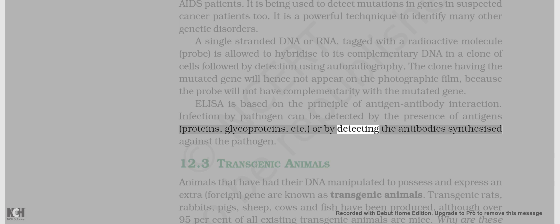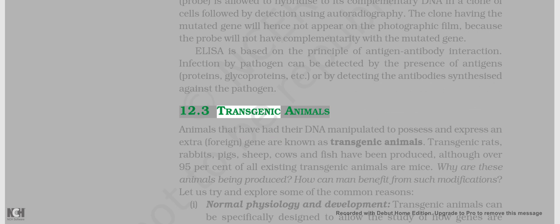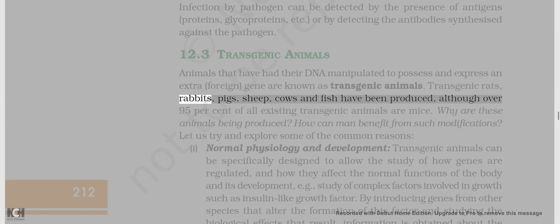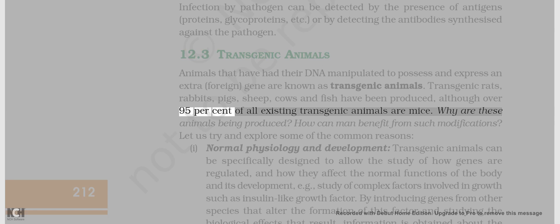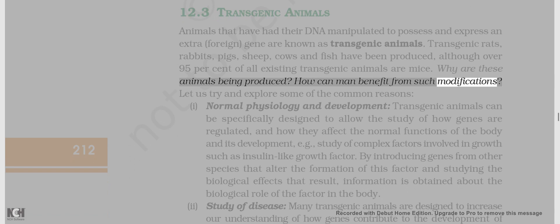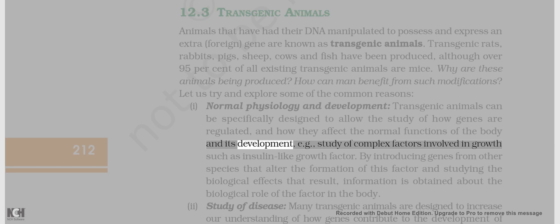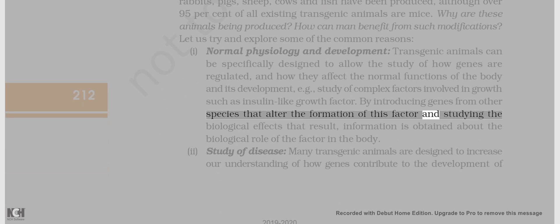12.3 Transgenic Animals. Animals that have had their DNA manipulated to possess and express an extra, foreign gene are known as transgenic animals. Transgenic rats, rabbits, pigs, sheep, cows and fish have been produced, although over 95% of all existing transgenic animals are mice. Common reasons for producing transgenic animals include: i. Normal physiology and development — transgenic animals can be specifically designed to allow the study of how genes are regulated and how they affect the normal functions of the body and its development, e.g., study of complex factors involved in growth such as insulin-like growth factor.